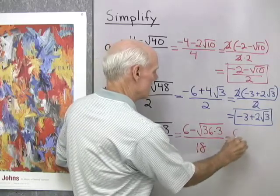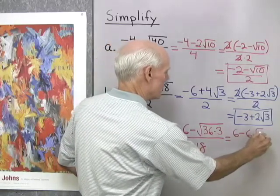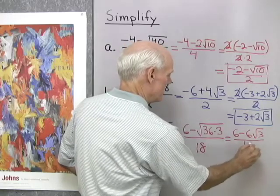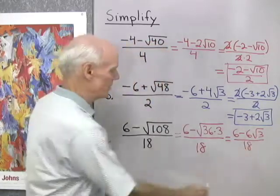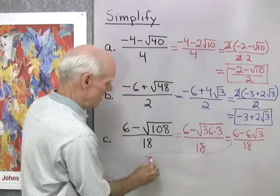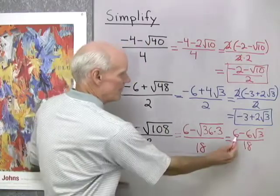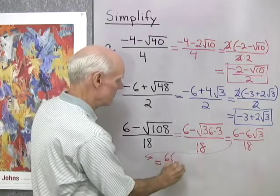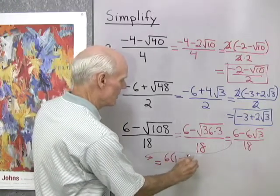That's going to be 6 minus 6 square root 3, all divided by 18. And let's see, let me move this down here, and I'll say equals, let me factor that 6 out of both terms in the numerator. 6 times 1 minus square root 3.